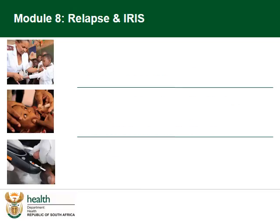This is module 8 of 8 modules on the prevention, identification and management of cryptococcal meningitis. This module will cover key aspects of management of the patient who relapses or worsens on cryptococcal meningitis treatment, including IRIS.